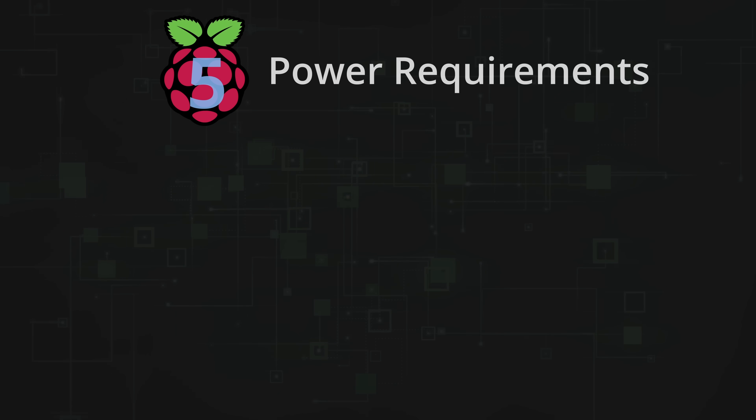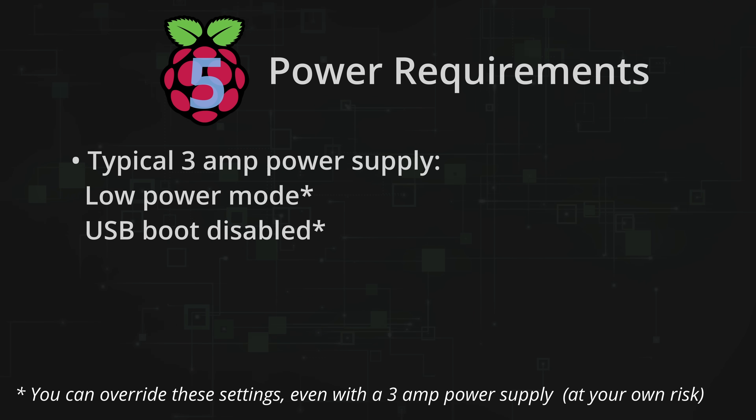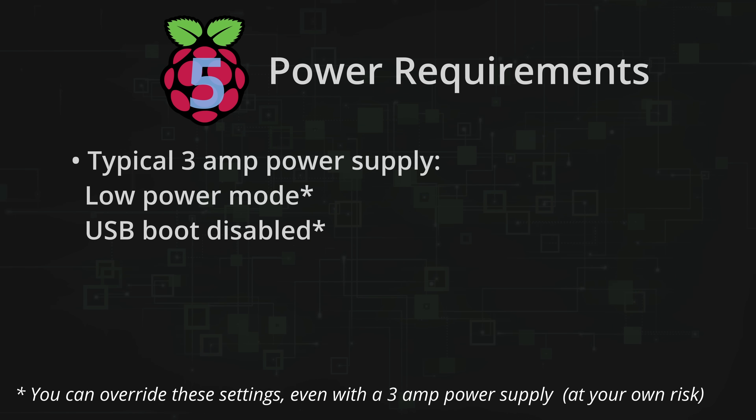There's quite a bit to get excited about, and I'm sure you'll enjoy the performance boost. But there are also different accessories this time around, and we'll start with the big one. In order to get started with the Raspberry Pi 5, you're going to need a new power supply — kind of. A 3A power supply, such as one you might have used on a previous model, will work with the Raspberry Pi 5, but it'll only provide the minimum amount of power the Pi 5 needs just to function.